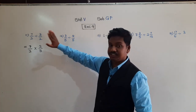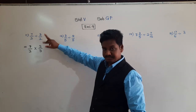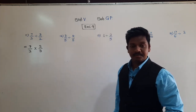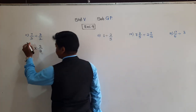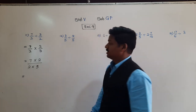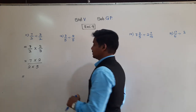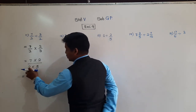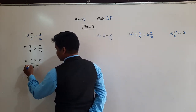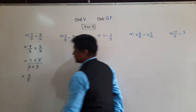Q11: 7/2 ÷ 3/2. Write as: 7/2 × 2/3. Now check if any numerator and denominator share a common table. The numerator 2 and denominator 2 are both in the table of 2. Divide both by 2: 2÷2 = 1 and 2÷2 = 1. Now multiply: 7 × 1 = 7 in the numerator, 3 × 1 = 3 in the denominator. Answer: 7/3.